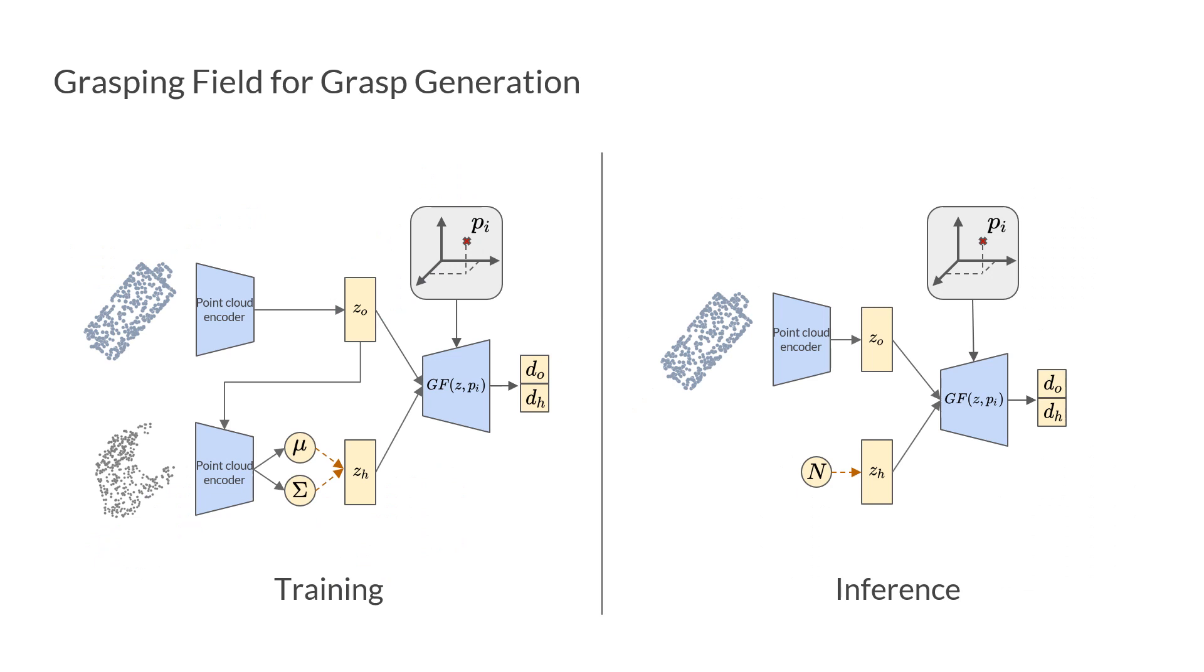We train the conditional VAE from the encoded hand and object point cloud. A KL divergence loss is applied on the hand latent vector. The grasping field decoder then predicts the sign distances based on the latent vector and the query point p.